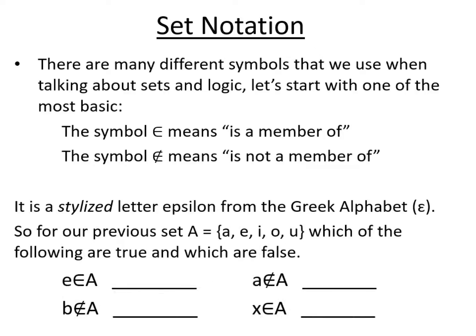So for our previous set where set A is equal to the vowels of the English alphabet, are these statements true or false? The first one is saying that E is a member of A. The letter E is shown in the set A, yes it is, so yes it is true that E is a member of A.